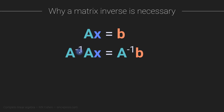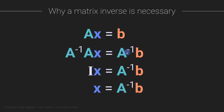A inverse is a matrix such that A inverse times A gives you the identity matrix. The identity matrix is the matrix equivalent of the number 1 — the identity matrix times any matrix or vector equals that matrix or vector. Applying A inverse to both sides of the equation gives us the solution: X = A⁻¹B. This is one of the primary reasons we need the matrix inverse in linear algebra.